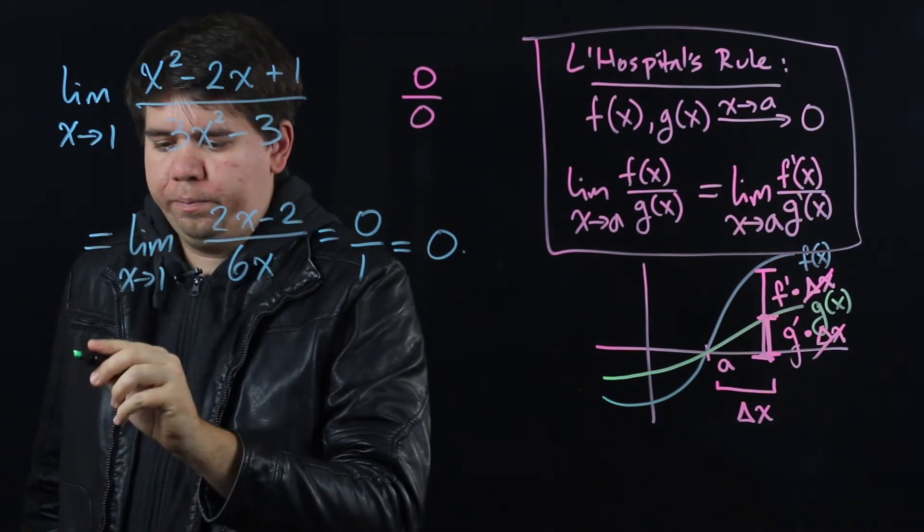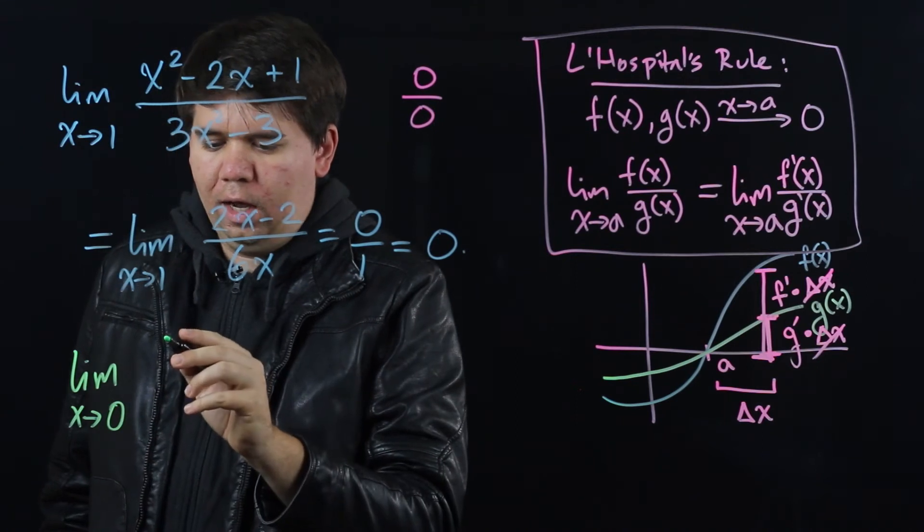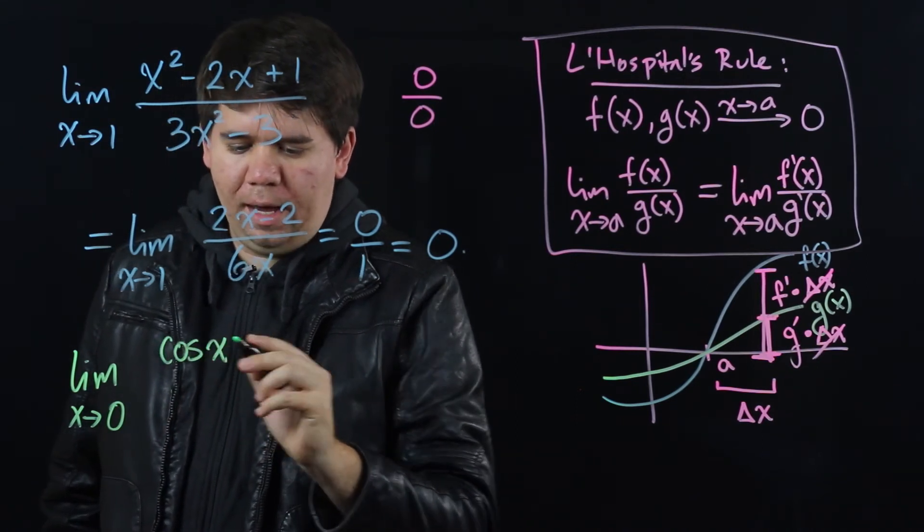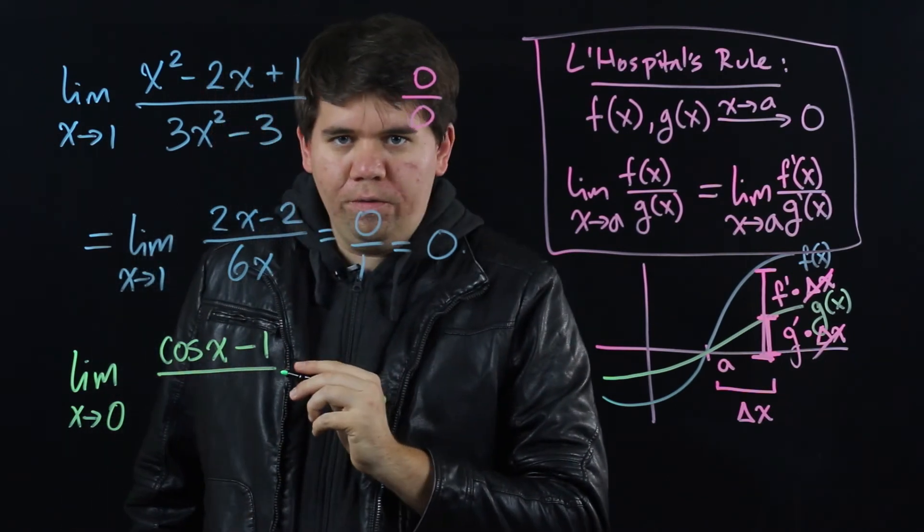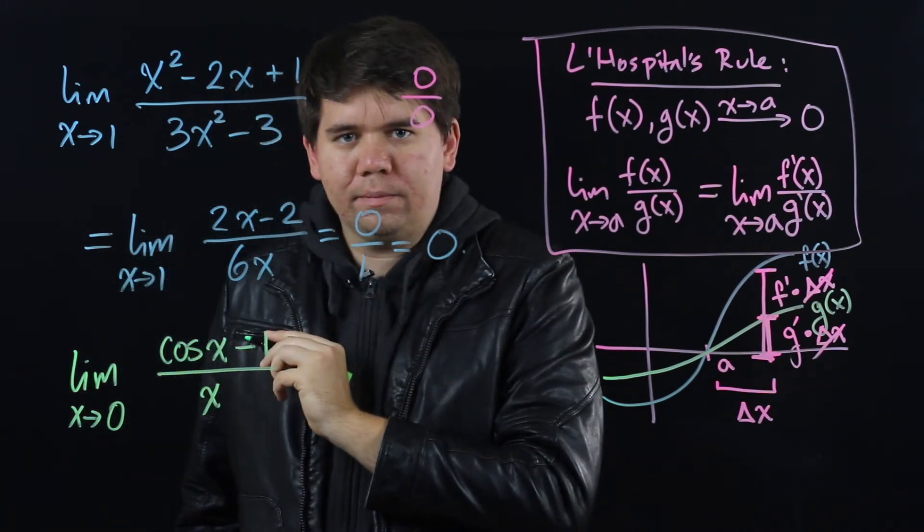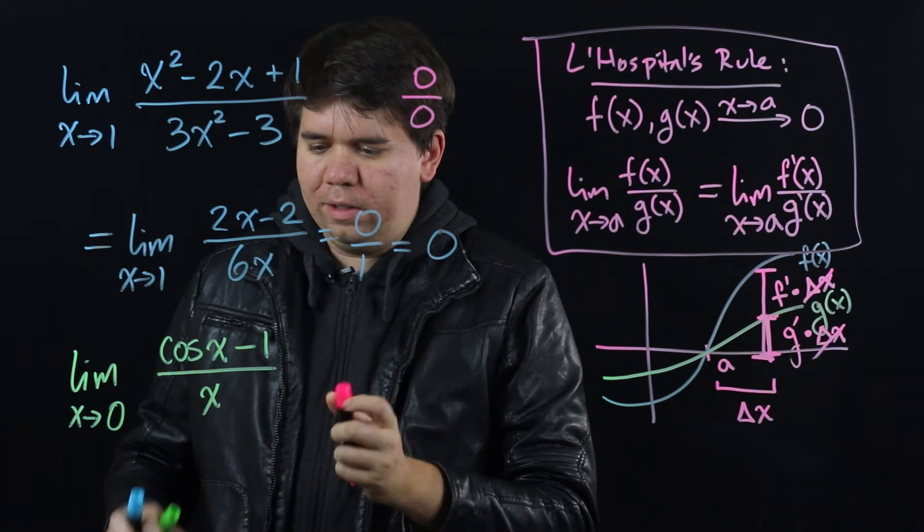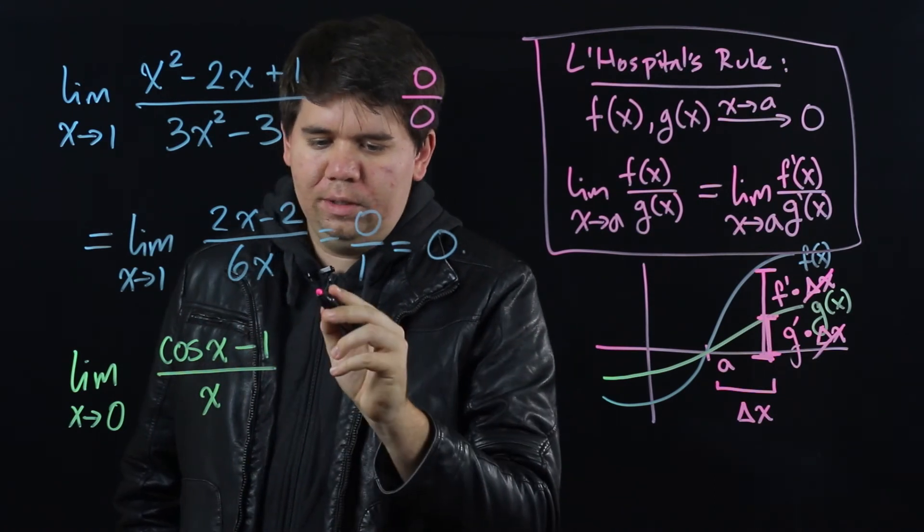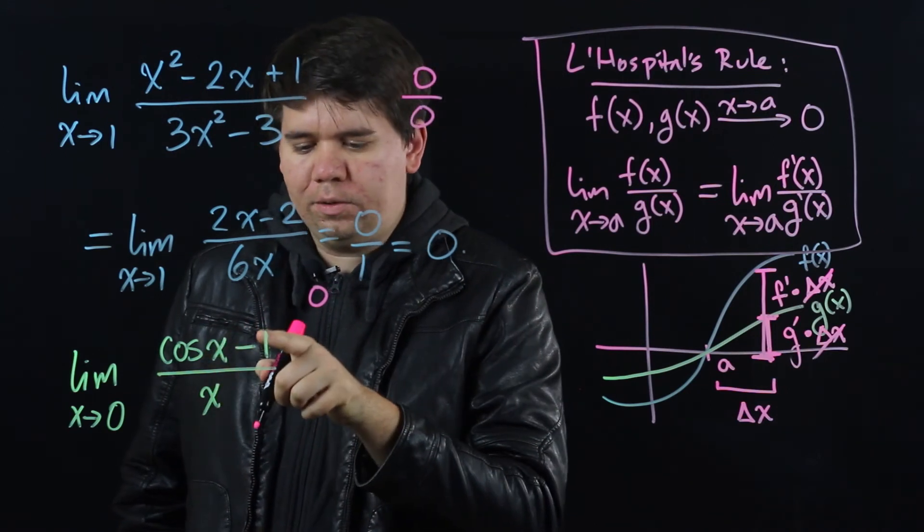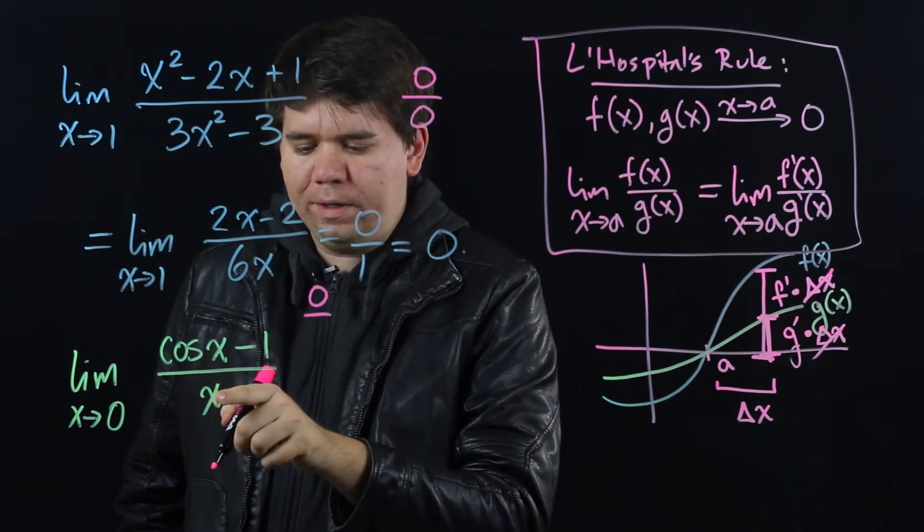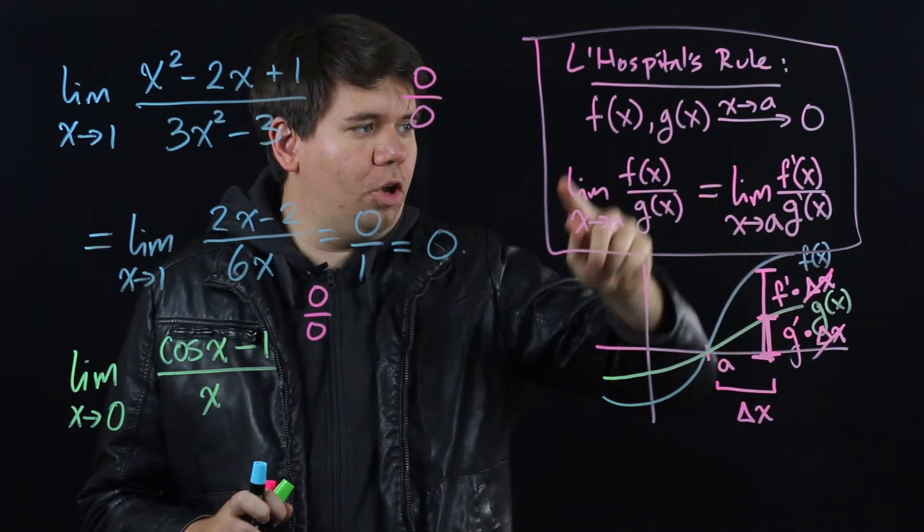Let's try one more example to see how this works. Let's do the limit as x goes to 0 of cos of x minus 1, all over x. Taking the limit as x goes to 0, the top of this function is headed to 0 because cos of 0 is 1, and 1 minus 1 is 0. The bottom of the function is also going to 0, so we have 0 over 0. That tells us to use L'Hopital's rule.